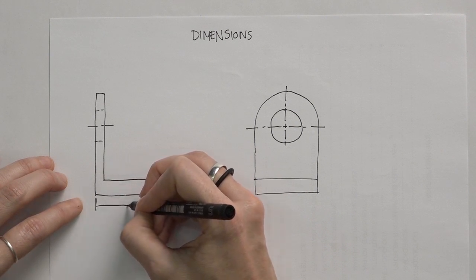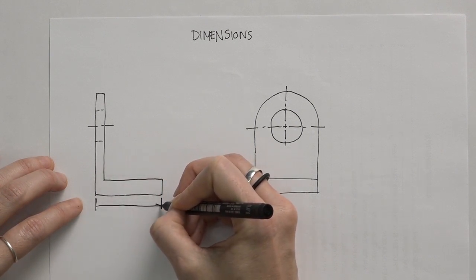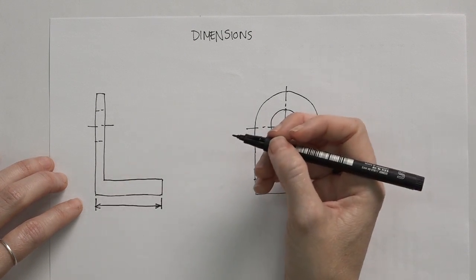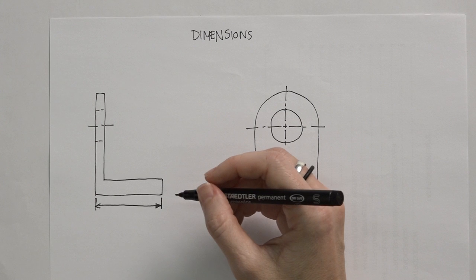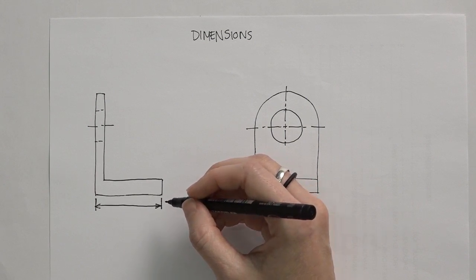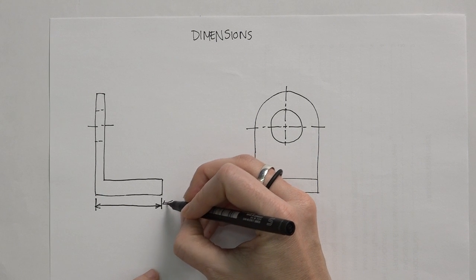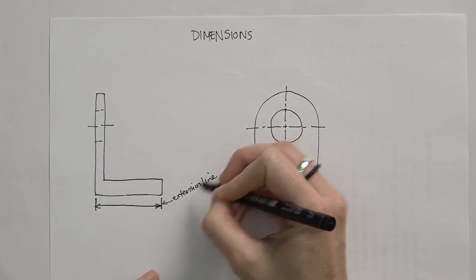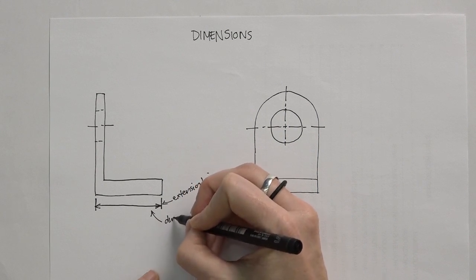And then in between these two extension lines we have dimension lines. So these two lines that you have to remember here, which is also discussed in the tutorial on line alphabet, the first being the extension line and the second being dimension line.